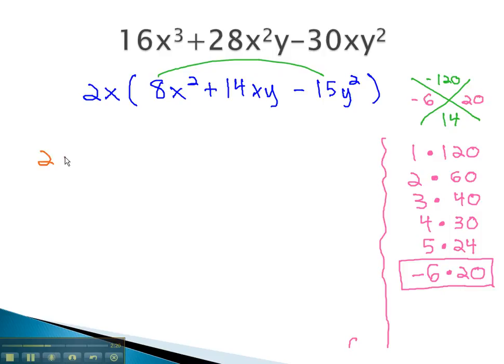We can now factor this, keeping the GCF out front, using the numbers negative 6 and 20 to get the 14xy in the middle. This means we have negative 6xy and 20xy to work with.